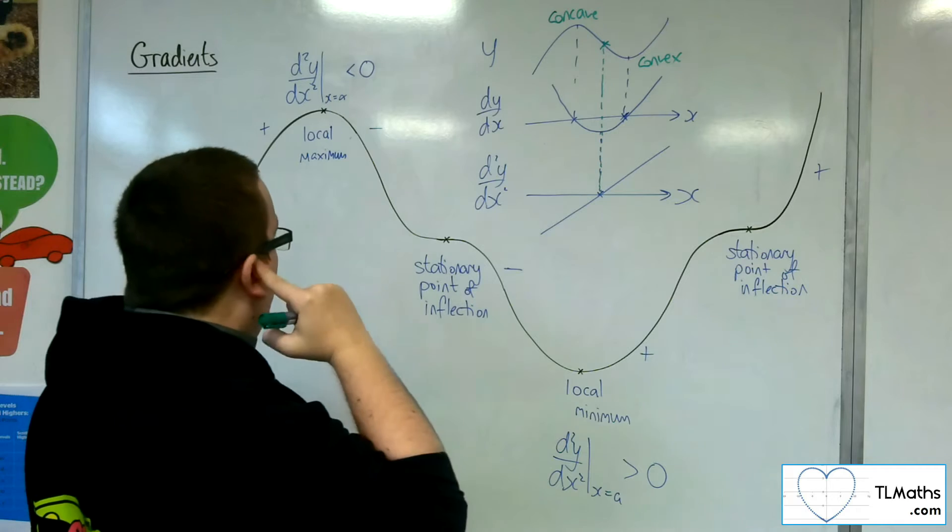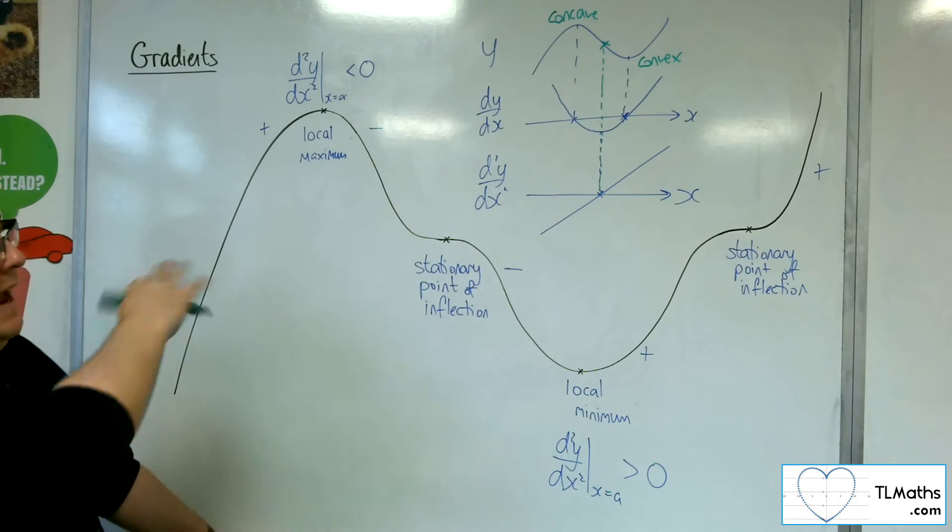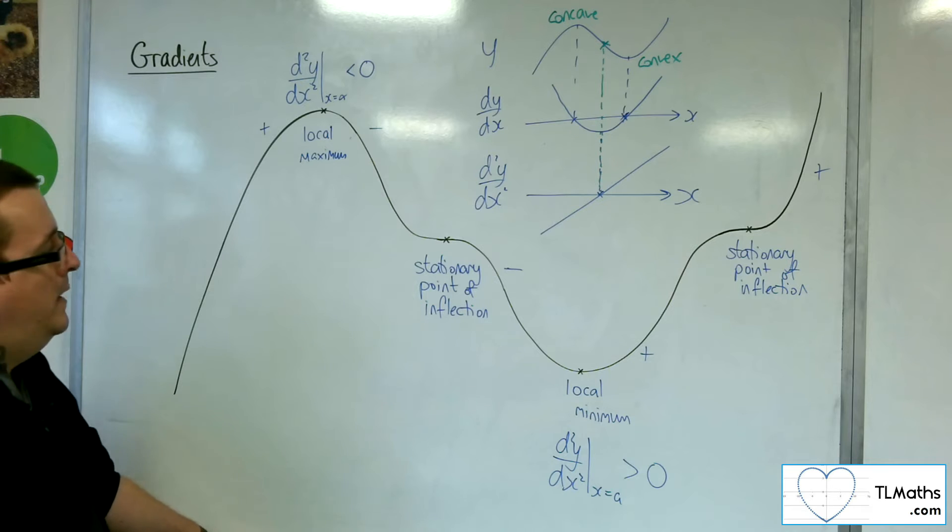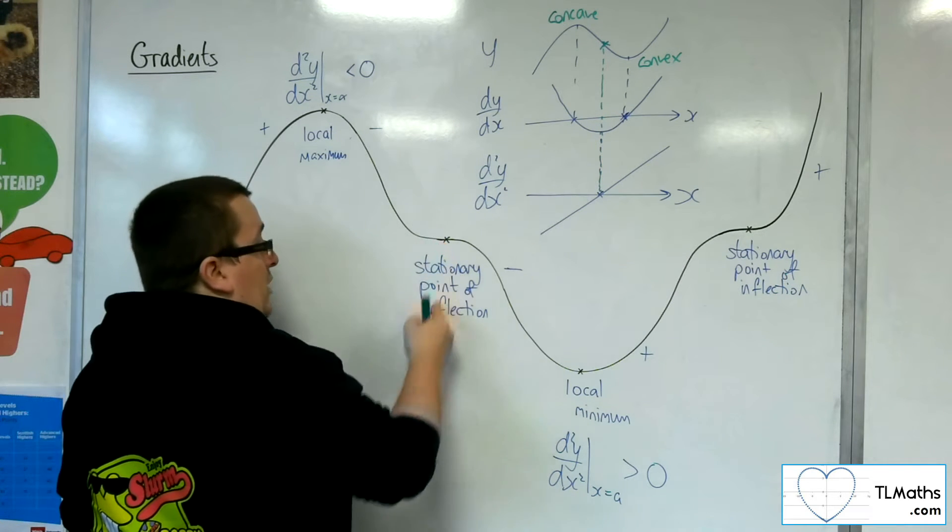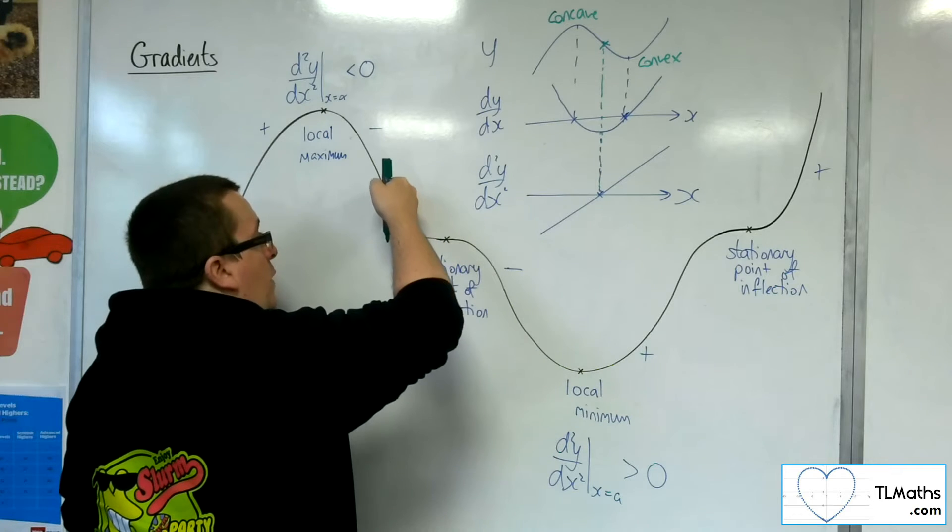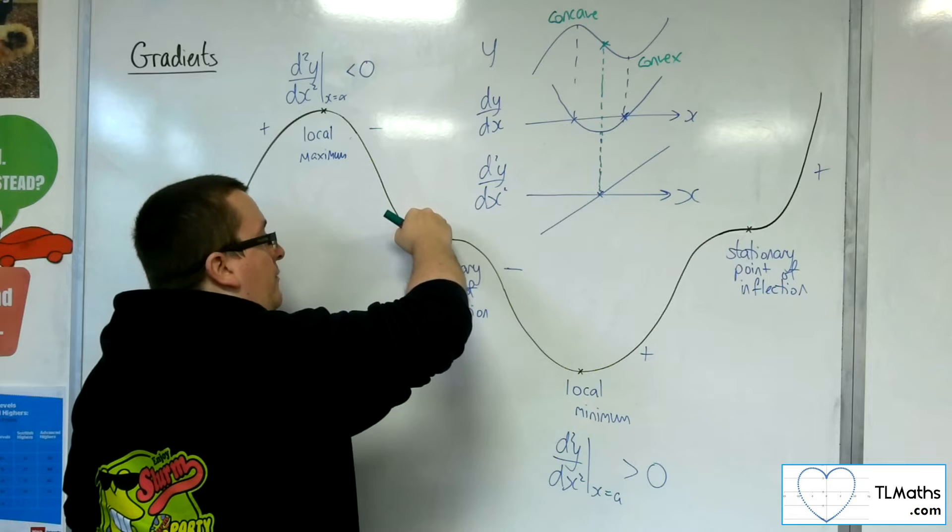So, in actual fact, if I'm looking at my curve here, then at these points of inflection, these stationary points of inflection, we are going from, well, this is concave, sorry, convex.